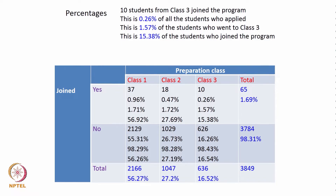Class 3 had a total of 636 people who attended, and 10 of them joined — so 1.57 percent of those who went to class 3 joined the program. And 15.38 percent of the students who joined the program went to class 3: out of the 65 who joined, 10 went to class 3. So there we saw the proportions.